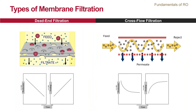There are two major types of filtration: dead-end or direct flow, and cross-flow. In dead-end filtration, all of the feed water passes through the membrane, leaving the solids behind on the membrane. It is a batch process — the filtration system needs to be taken offline and the filter needs to be either cleaned or replaced.